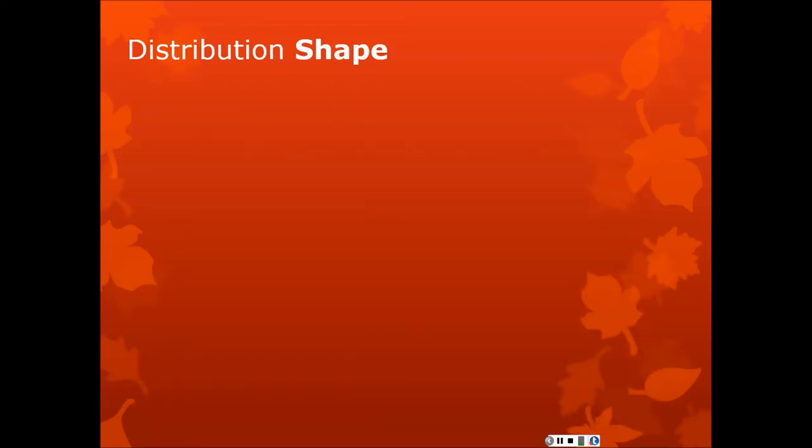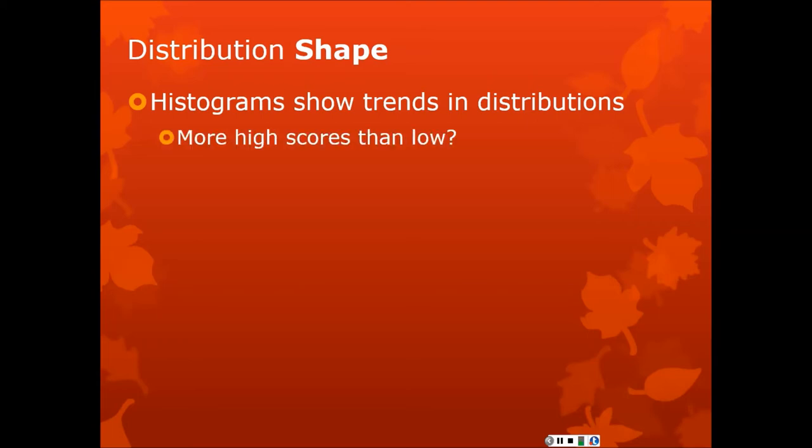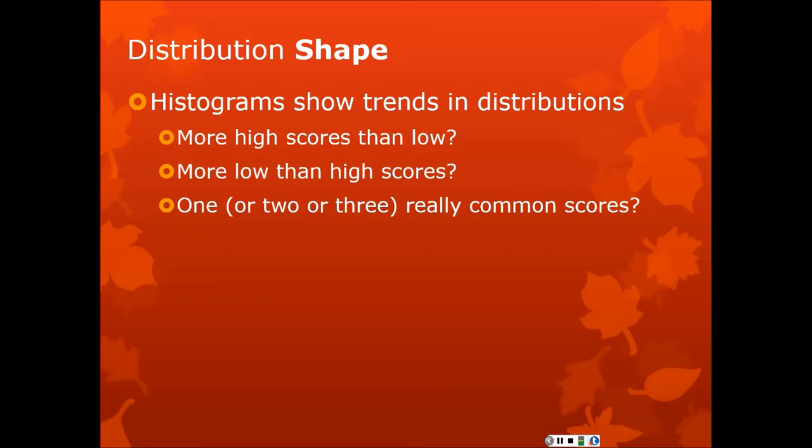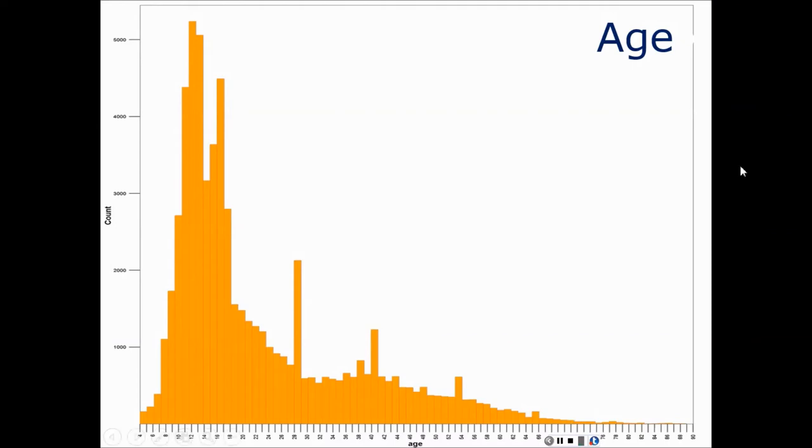When we look at histograms, that's how we can figure out what shape the distribution is in. And shape, it all comes from histograms, and it tells us a lot about how you can treat the data. Histograms show trends in distributions, like which values are more popular, more common. The highest bars are the most popular values. Are there more high scores than low? So here is a data set of the ages of thousands upon thousands of people in a census. But you can see that the average has got to be down late 20s, mid-20s, maybe even early 20s, because look how many people there are in the 8, 10, 12, 13 range.